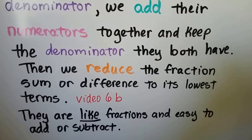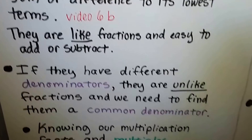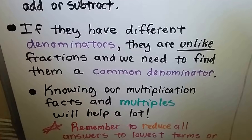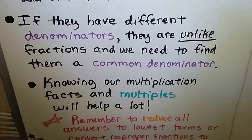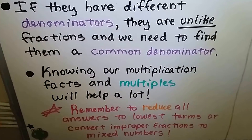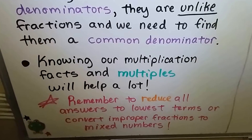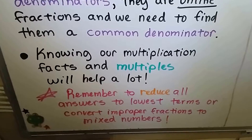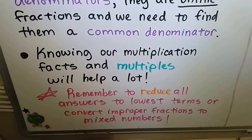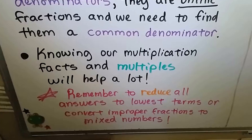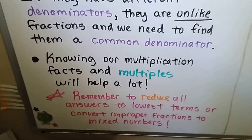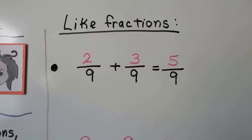If fractions have the same denominator they are like fractions — easy to add or subtract. If they have different denominators they are unlike fractions and we need to find a common denominator. Knowing our multiplication facts and multiples will help a lot. Remember to reduce all answers to lowest terms or convert improper fractions to mixed numbers, unless you have to write it as an improper fraction on that standard grid we talked about.